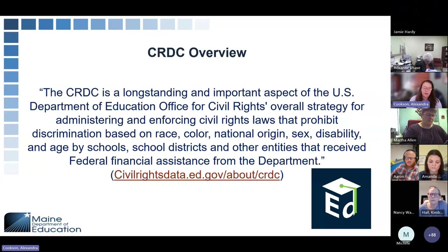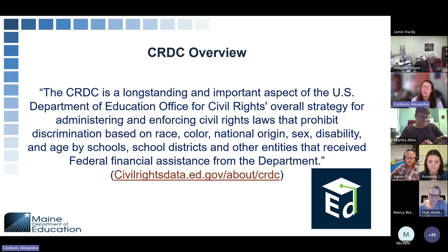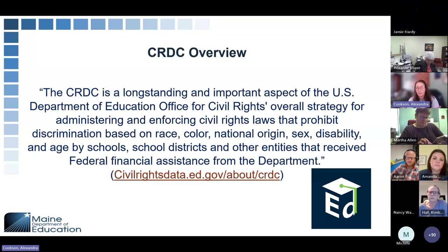This is a brief overview of the CRDC, directly from their website. This is a data collection of civil rights data for ensuring that students are not discriminated against based on race, color, national origin, sex, disability, and age by schools, school districts, and other entities that receive federal financial assistance. This report is just ensuring that students are treated equitably in school districts as we are educating them.